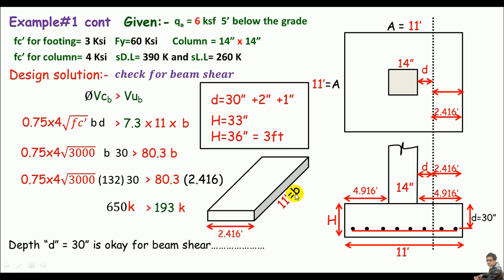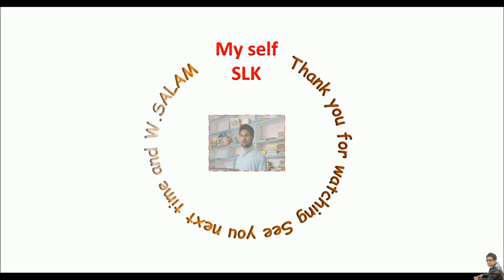Now we are ready to design the reinforcement for this footing, but that will not be covered in this lecture. The reinforcement design follows the same method as one-way slab design: find the moment, calculate the steel area, determine bar numbers and development length. This is how we calculate the dimensions and size of a square footing. Thank you for watching, see you next time.